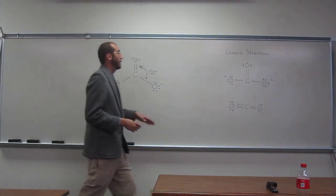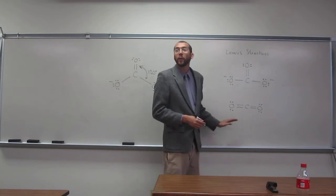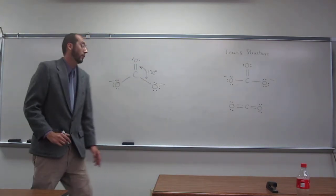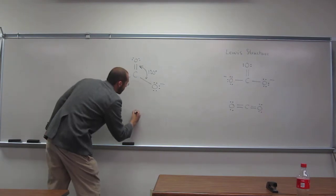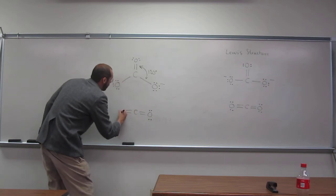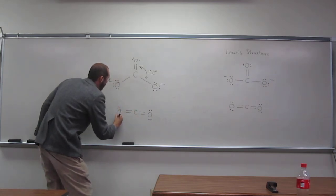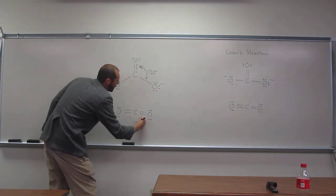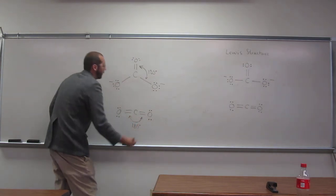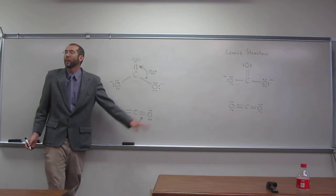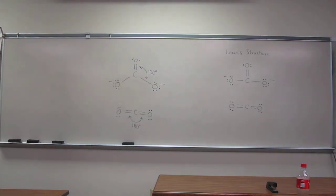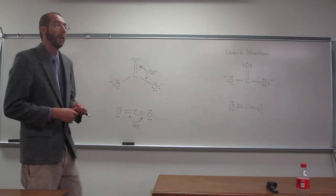In fact, this Lewis structure of carbon dioxide looks exactly the same as the VSEPR structure. Let's draw that VSEPR structure, or the actual structure, and we see a bond angle being 180 degrees. Why? Because that's the furthest away two things can get from each other on a sphere.